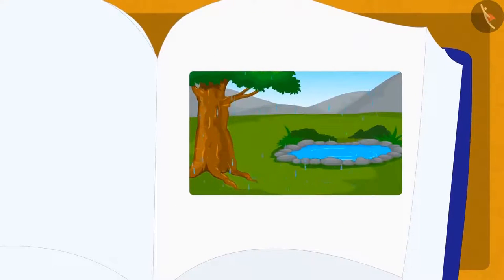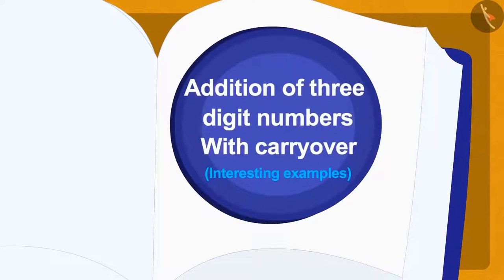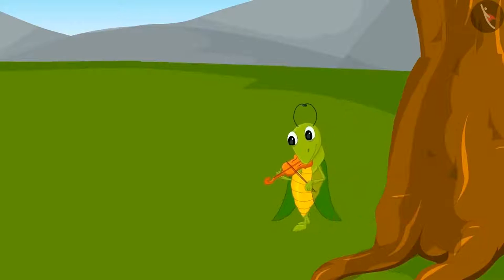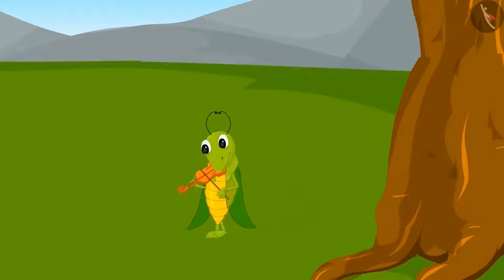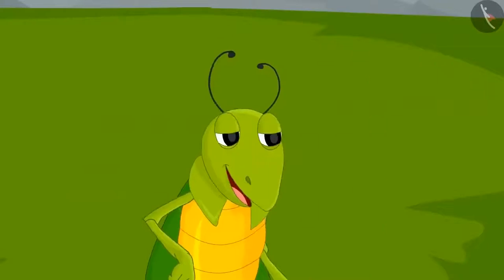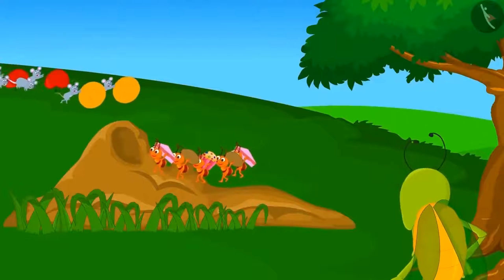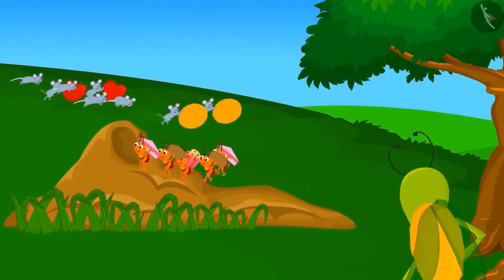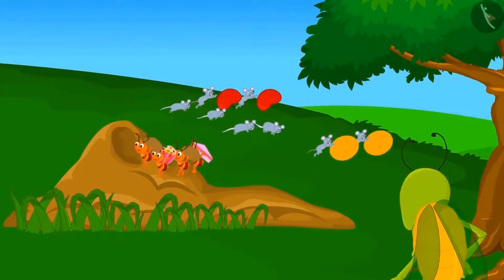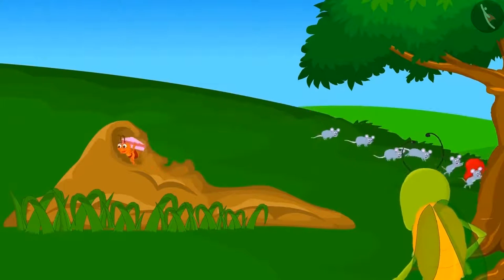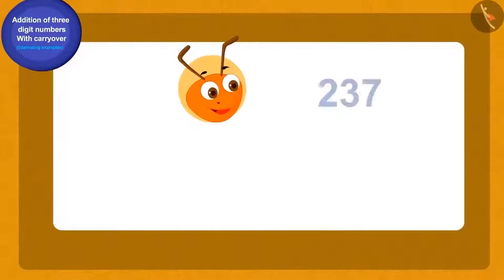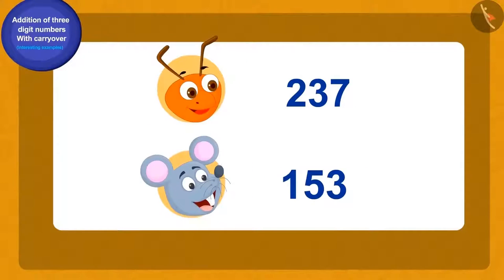Children, do you like the rainy season? Come! Let us listen to a story of the rainy season in this lesson and see some interesting examples of addition of three-digit numbers. One day, Tinku the grasshopper was walking around playing the violin. Suddenly, he saw a herd of ants and mice. The ants and mice were carrying pieces of some food items.